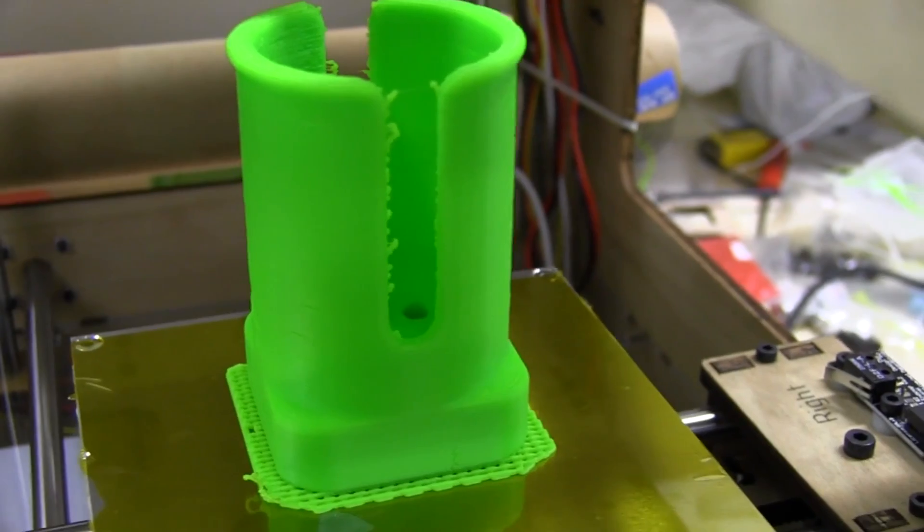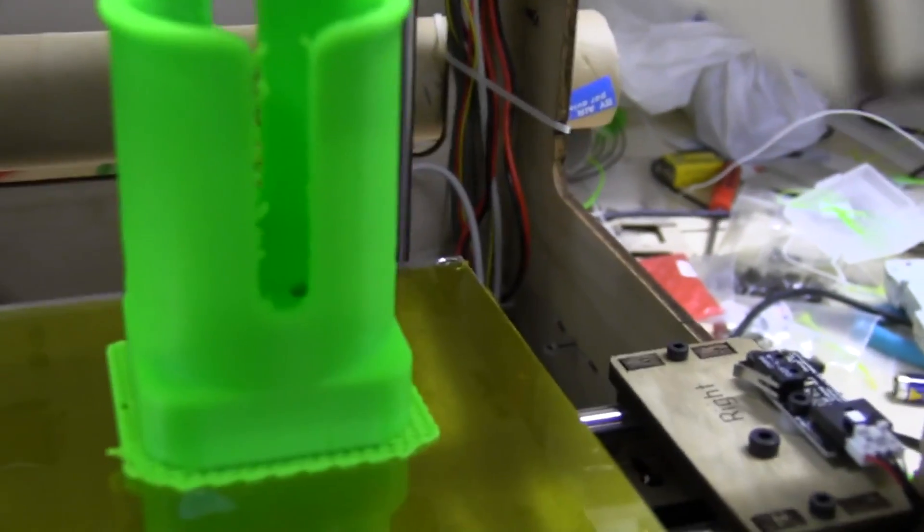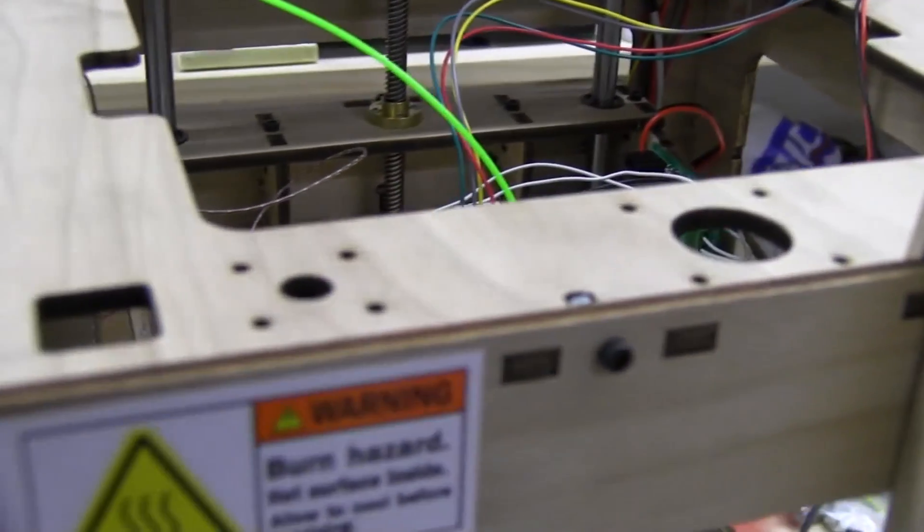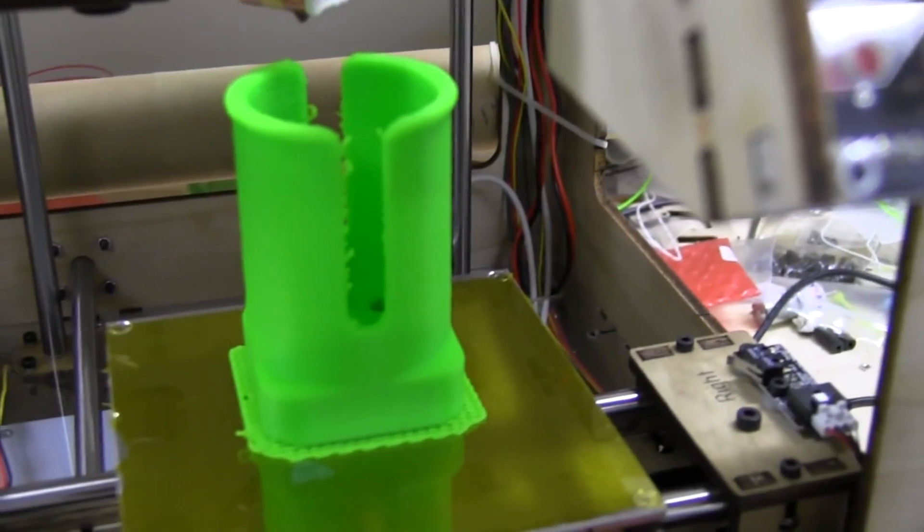Well, check this out. I decided to print a spool holder to replace my bodgy cardboard spool holder on the back there that I've got. So that should mount on the top here and I should be able to have my spool on the top. Awesome. Let's break it off and give it a try.